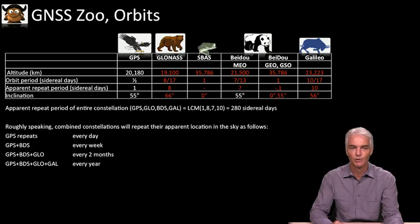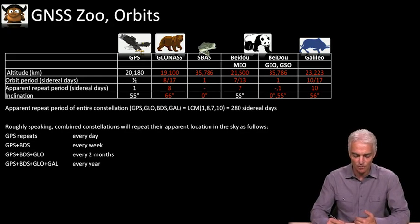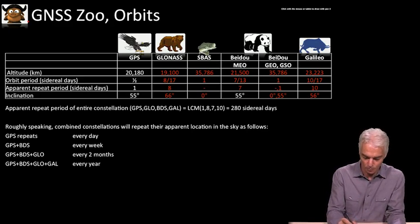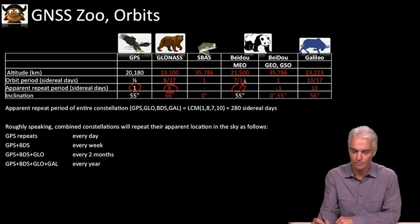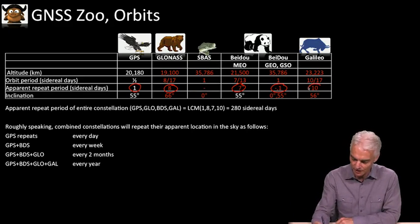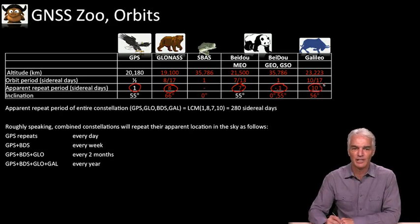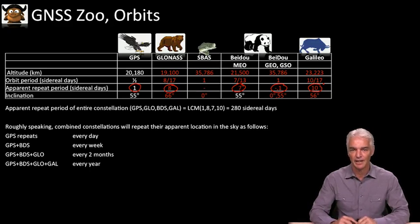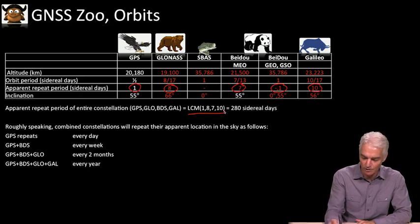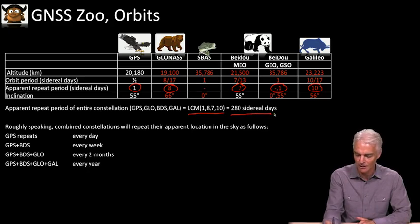We'll summarize them all here and then bring up something new: given that each of these constellations repeats in — for example — one day for GPS, eight sidereal days for GLONASS, seven sidereal days for Beidou MEOs, one sidereal day for the Beidou geosynchronous, and 10 days for Galileo, the question arises: how long before the entire constellation of all these different satellites — GPS, GLONASS, Beidou, and Galileo — repeats itself as viewed by a stationary observer on the Earth? The answer is we have to work out the lowest common multiple of 1, 8, 7, and 10, and that's 280 sidereal days.